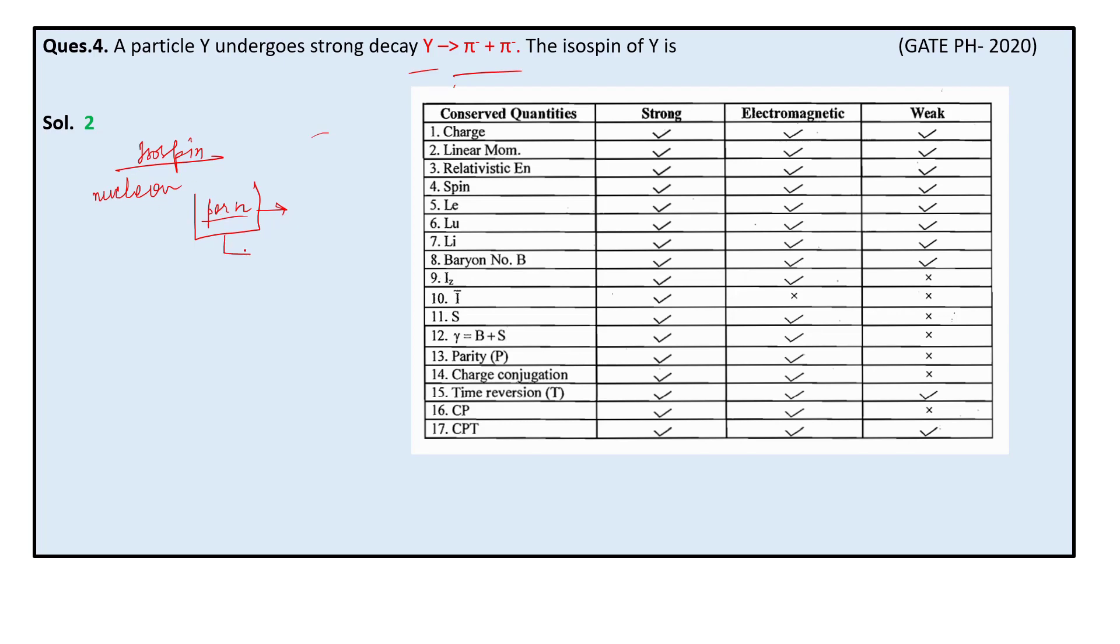Now to find out the isospin, we have this formula: m = 2i + 1, where i is isospin and m is the multiplicity number. In this question, we are given pions.